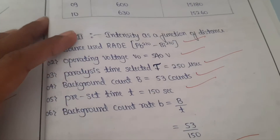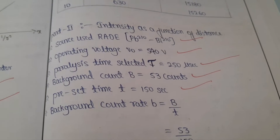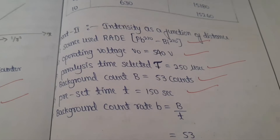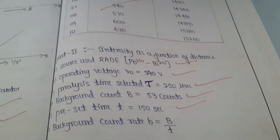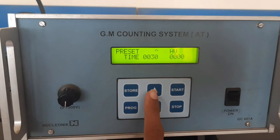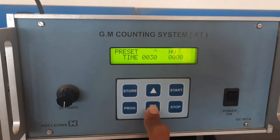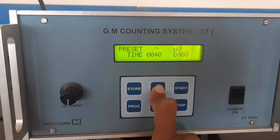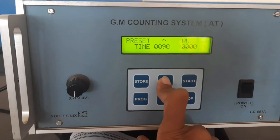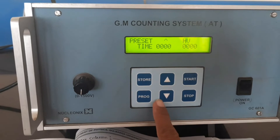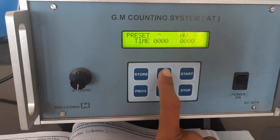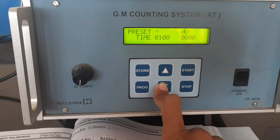Part two is very important: intensity as a function of distance. For that, the source is bismuth, operating voltage is 540 V, and paralysis time we have to keep at 250 microseconds. The preset time we have to set to 150 seconds. Here are the keys for input — it must be 150 for the second part, intensity as a function of distance.